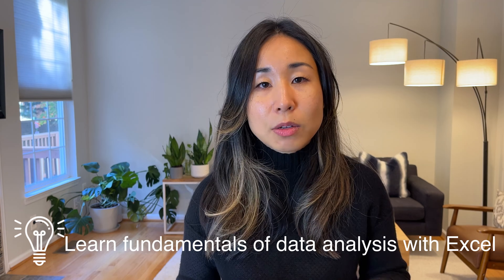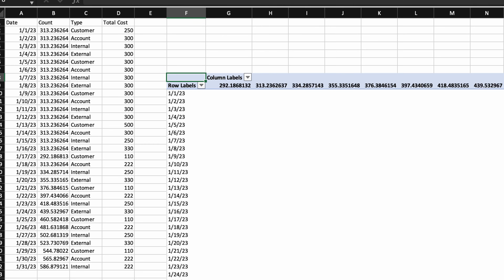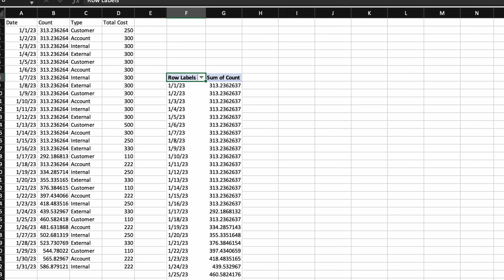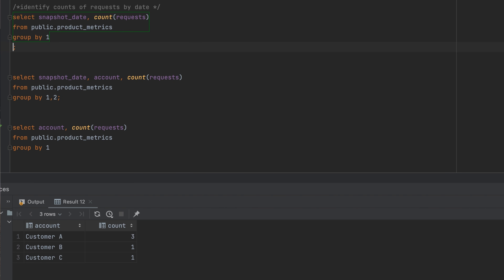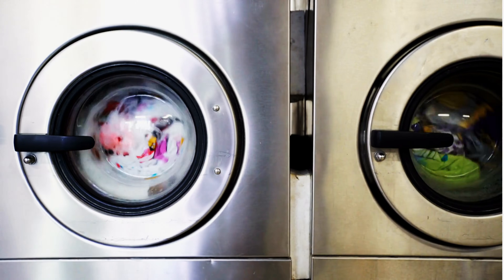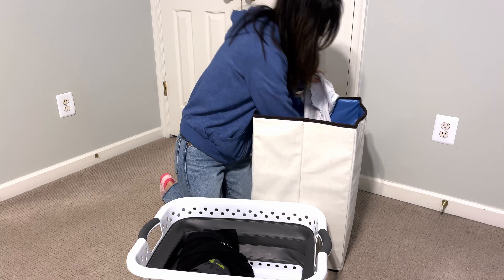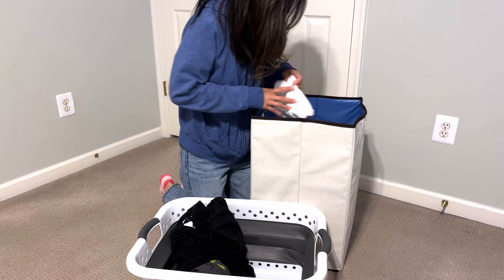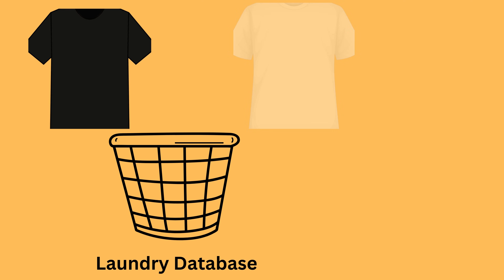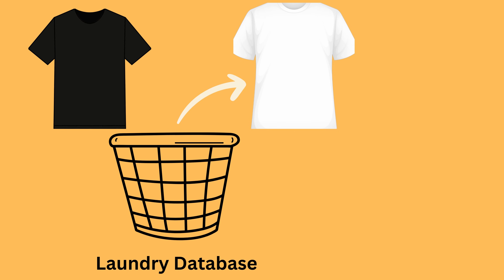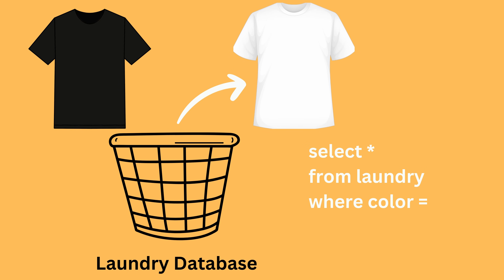If you're unfamiliar with what a database or SQL is, think of doing your laundry. When you do laundry, you put all your dark clothes and white clothes in a hamper — which is your database — and you basically want to separate the two. How do you do it quickly? You run a query, which lets you take pieces of what you need and sort the data — sorting your laundry dark versus white.